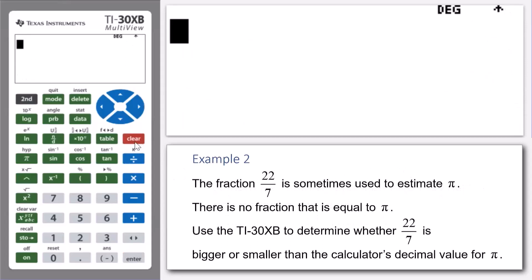Okay, let's have a look at our second example. Our second example relates to a calculation involving pi. What we're going to do is show how a calculator can be used to establish an order of fractions, decimals, and percentages.